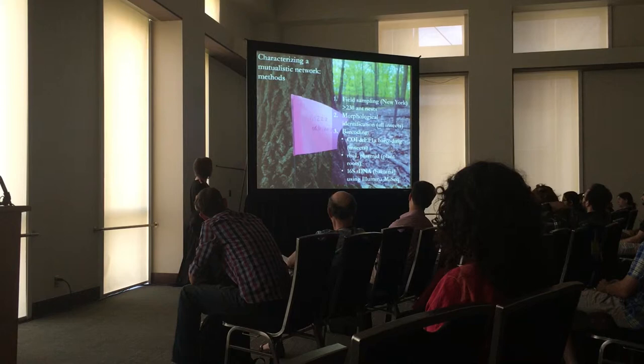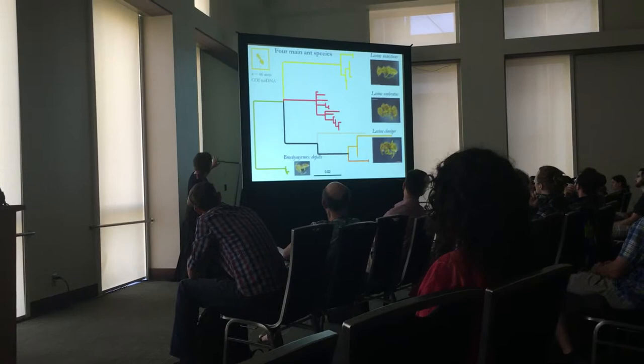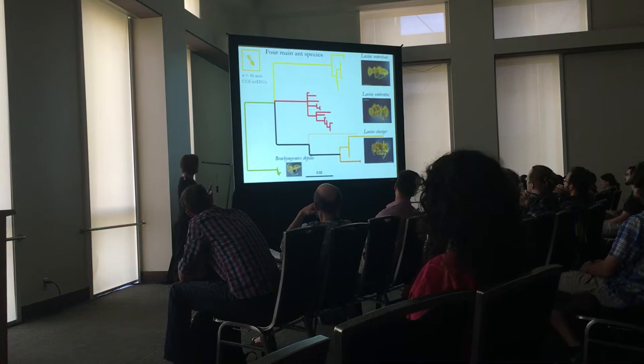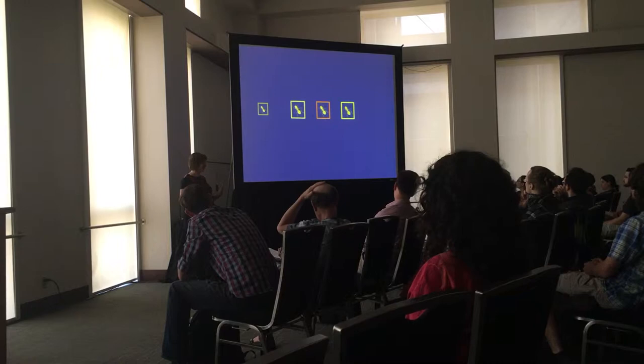For the ants, this neighbor-joining tree based on mitochondrial sequences of a subset of samples shows clearly that we're dealing with four relatively common species in the system: three Lasius species and one Brachymyrmex ant. These are really the core of the system and the most common ones. So if we start building a network, this is very stark — four ant species.